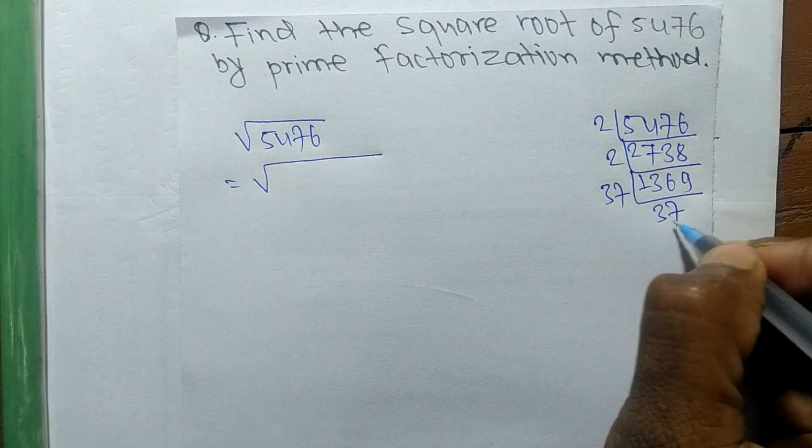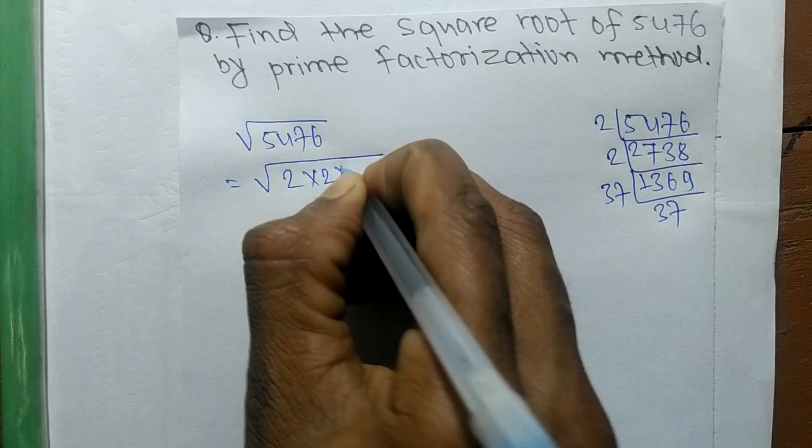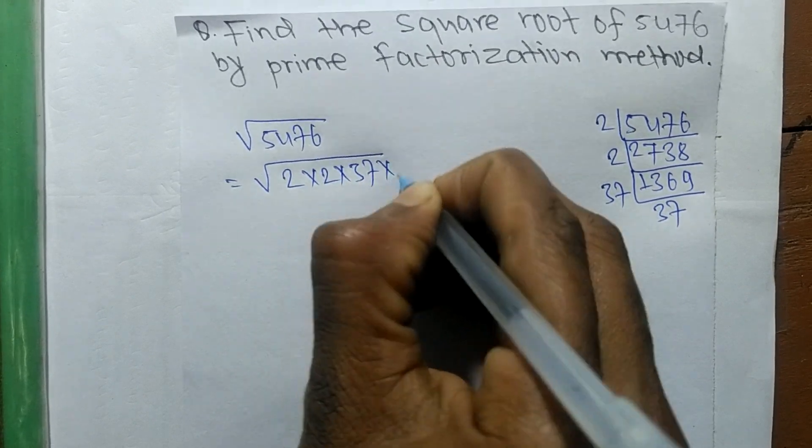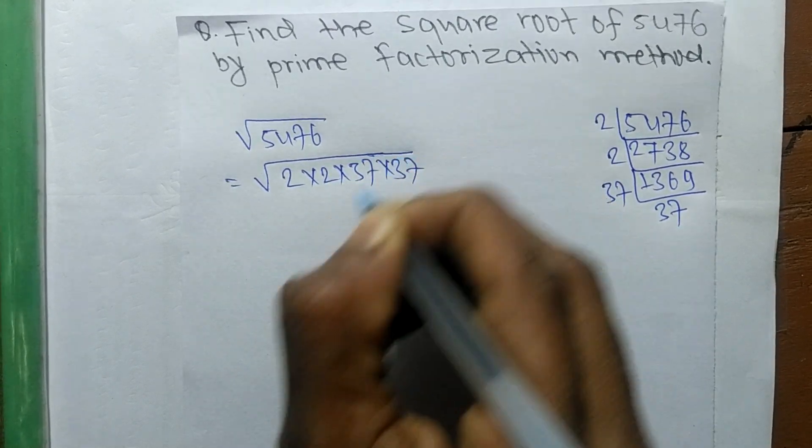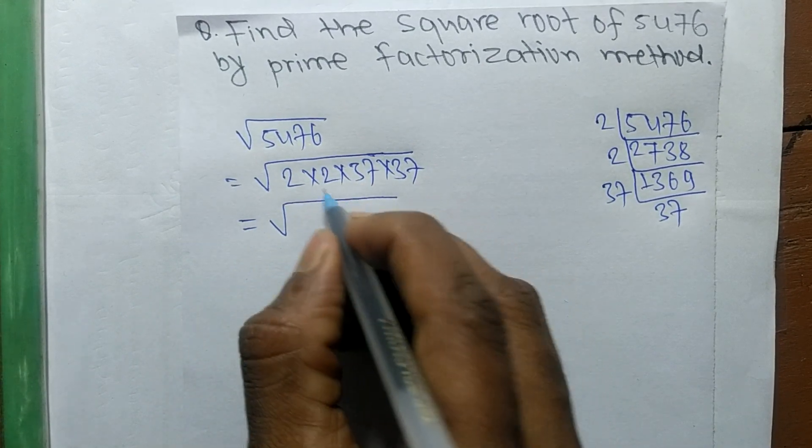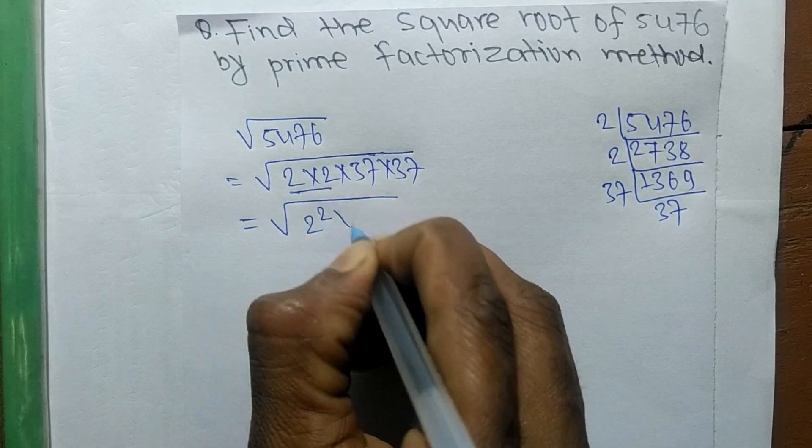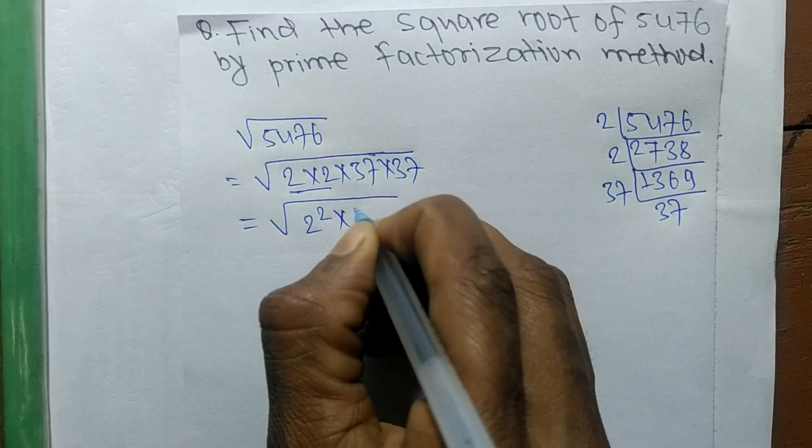So it is 2 into 2, 37 times 37. So it is equal to, now we make the square of all these numbers, so 2 into 2 is 2 squared, 37 into 37 is 37 squared.